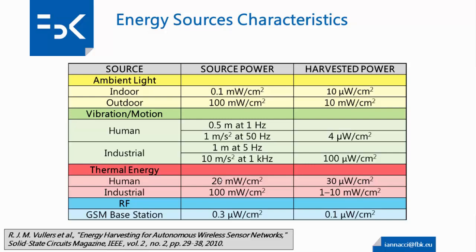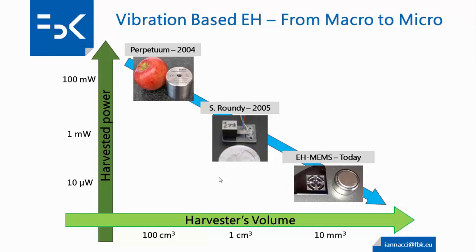It is also interesting to see how different sources can be combined with different converters. Still talking about vibrations, what we have witnessed in the last years in the research and industrial environment is actually an effort for miniaturization of devices. Here I reported just a few examples. This is the Perpetuum, a commercially available electromagnetic converter, which is the same size as an apple. Of course, as we shrink down in dimension and volume, we also reduce the power that we can harvest. Today there is quite a large interest in the utilization of MEMS technology for the realization of converters.